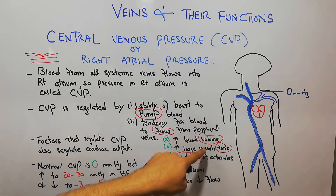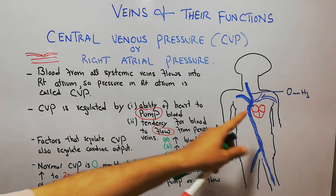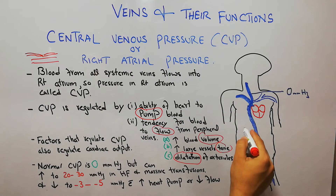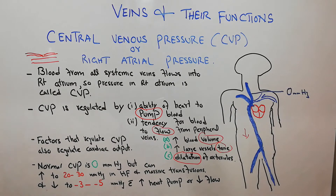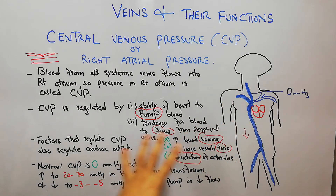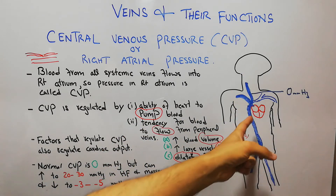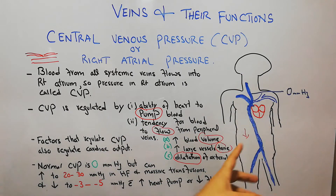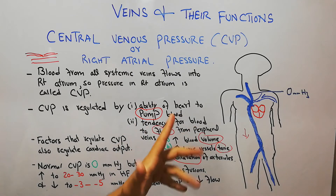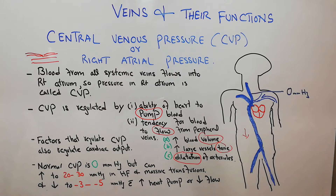Similarly, a decrease in blood volume, decrease in tone, and constriction of the arterioles is going to decrease the blood flow towards the right atrium. To summarize, the central venous pressure is regulated by the pumping of the heart and the tendency of blood to flow. Blood flow will increase or decrease with blood volume, tone of the vessels, and dilatation or constriction of the arterioles.